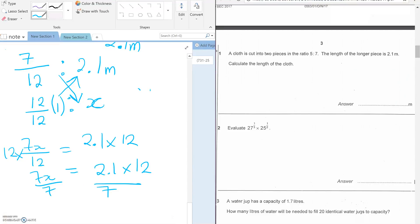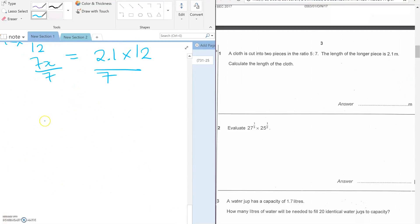So these sevens cancel, X is equal to 2.1 times 12 over 7. If you work this out, it gives you 3.6 meters. So the total length of the cloth is 3.6 meters. That's the end of the first part, see you the next one.